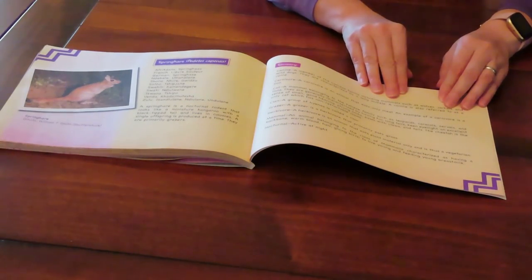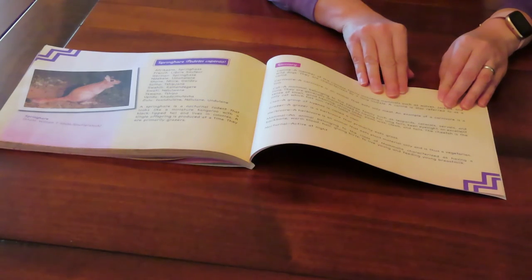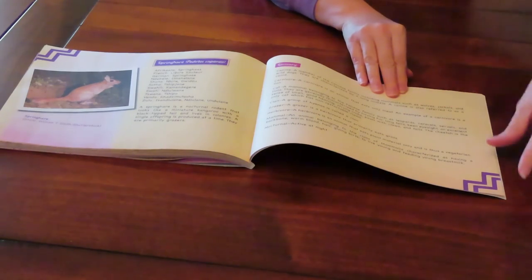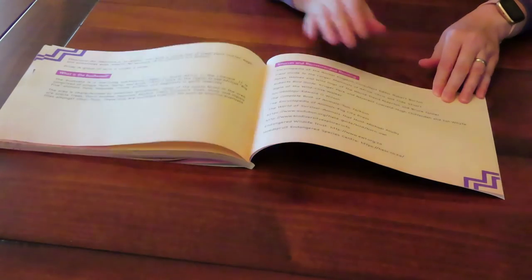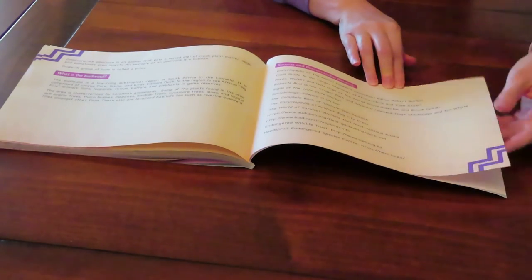There is a short glossary which explains terms found in the book such as canine, carnivore, clan, etc. There also is a bibliography.